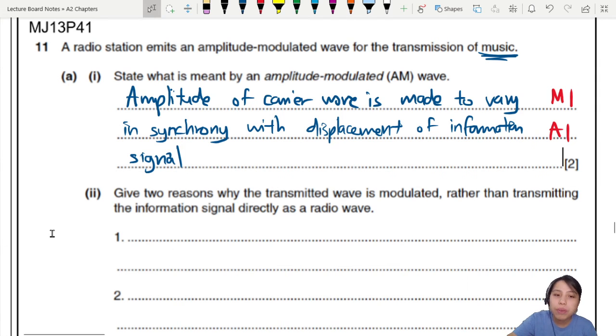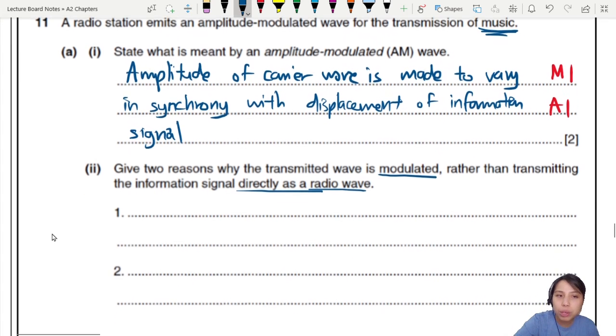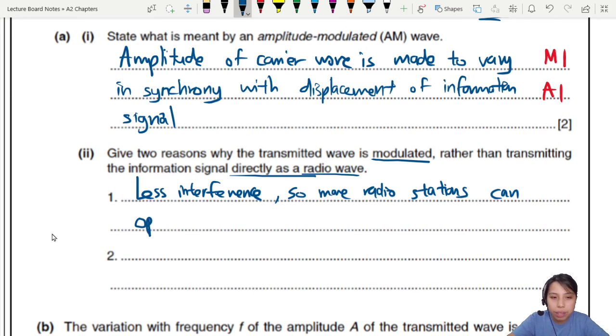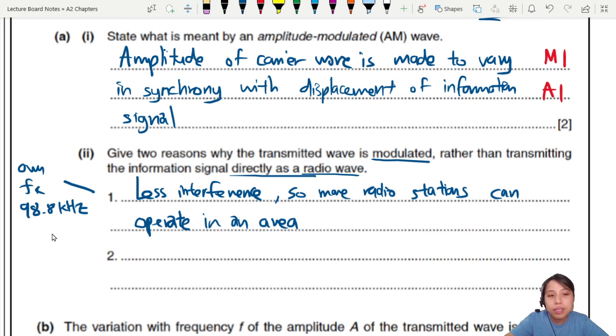Part two: Give two reasons why the transmitted wave is modulated rather than transmitting the information directly as radio. Why do we bother to modulate? We need two reasons. We can say that the first reason is that there'll be less interference between different transmitters and receivers, because you cannot spam all the frequency into the air. We want it to modulate so that there's less interference, so that more radio stations can operate in one area without fighting each other and interfering each other's signal. That is because each of them have their own carrier frequency. Maybe I'm like, I really like this number, I want 98.8 kilohertz. That is my frequency. I will modulate the amplitude there, but you guys don't touch it.